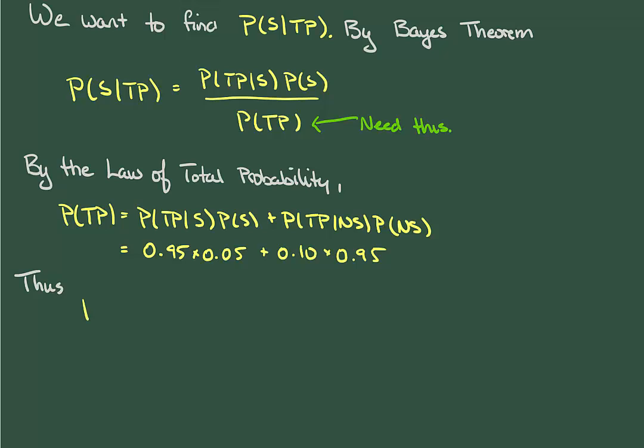So we plug everything into our formula, throw those numbers into a calculator, and we get an answer of one-third.